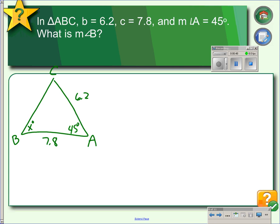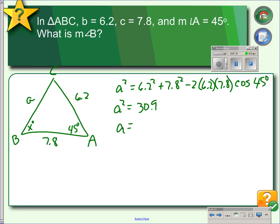To find that angle, we could use the Law of Cosines because we have two sides and the included angle. We're going to say a² equals 6.2² plus 7.8² minus 2 times 6.2 and 7.8 times the cosine of angle A. We enter this into our calculator and get a² equals 30.9.